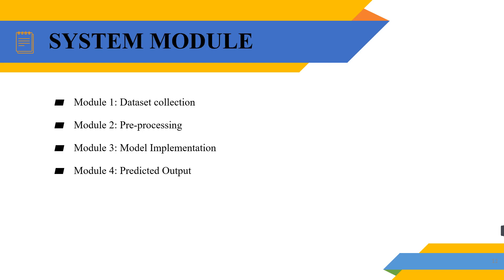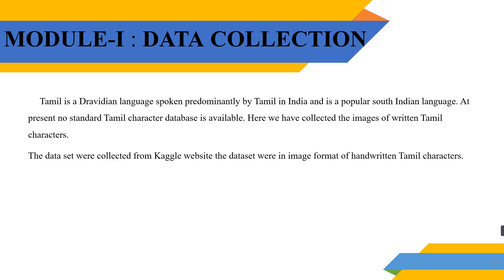The system architecture has four modules. First is data set collection, then the pre-processing method, then model implementation, and finally we get the predicted output.